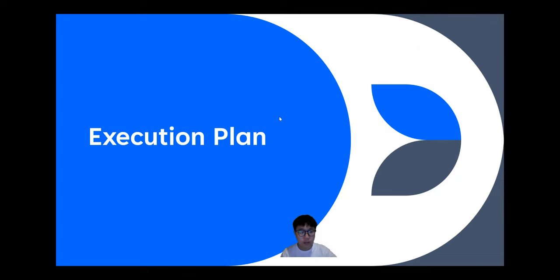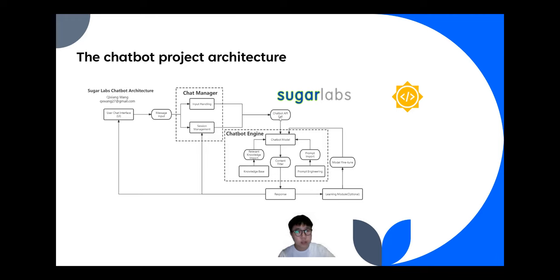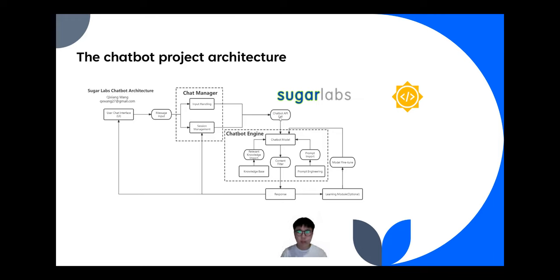I'd like to talk about the execution plan for my project. The initial architecture consists of two main components: the chat manager and the chat engine. The chat manager is responsible for handling the overall management of the chat activities, including input handling and session management. Session management helps maintain the state of chat sessions, including history and context. The chat engine is a core component that processes the input and generates responses. For this, I have selected LLaMA 3 as the model for my project.